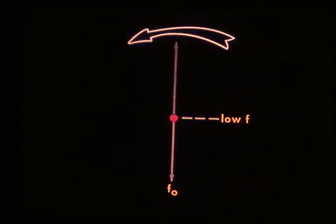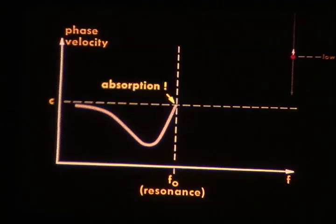Notice also how small the white phasor is at resonance. Very little light gets through. In other words, near F0, the material absorbs the light. It is opaque there, or nearly so.